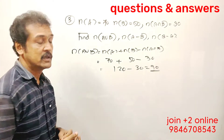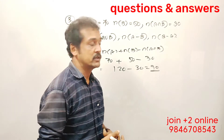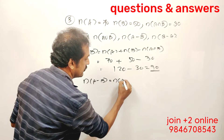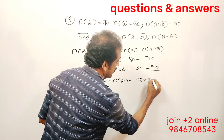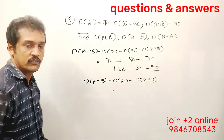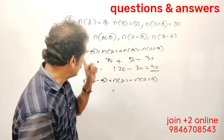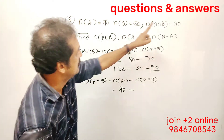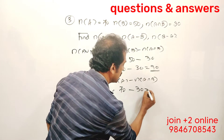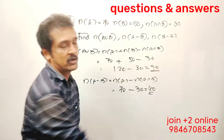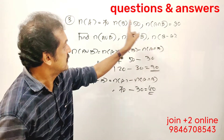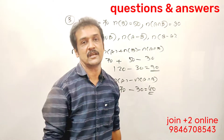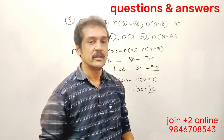Next, find N of A minus B. The formula is N of A minus B = N of A − N of A intersection B. That is 50 − 30, which is equal to 20. That is clear.